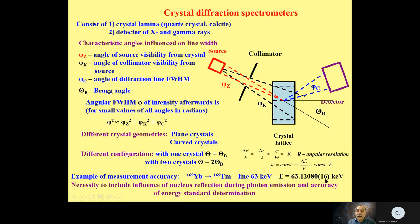Because this accuracy is so high, it is necessary for the calculation of gamma energy to include the recoil of the nucleus which emits the photon. During exercises, we will calculate examples connected to these problems. Thank you very much for today.